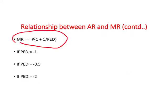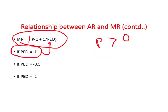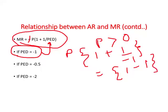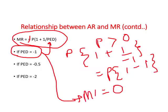Copying this formula: MR = P × (1 + 1/e), where e is price elasticity of demand. Price is always a positive number. Price elasticity of demand is always negative. If price elasticity of demand equals negative 1, plugging in gives P times (1 + 1/(-1)), which equals P times (1 minus 1), which equals zero. So when price elasticity of demand is negative 1, marginal revenue equals zero.